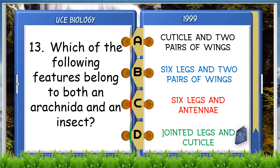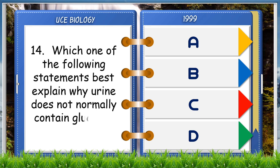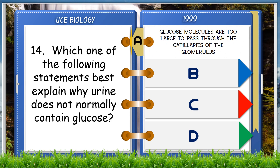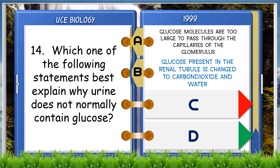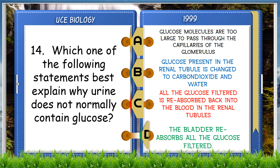A. Exoskeleton and cuticle. Which one of the following statements best explains why urine does not normally contain glucose? A. Glucose molecules are too large to pass through the capillaries of the glomerulus, B. Glucose present in the renal tubule is changed to carbon dioxide and water, C. All the glucose filtered is reabsorbed back into the blood in the renal tubules, D. The bladder reabsorbs all the glucose filtered. The answer is C, all the glucose filtered is reabsorbed back into the blood in the renal tubules.